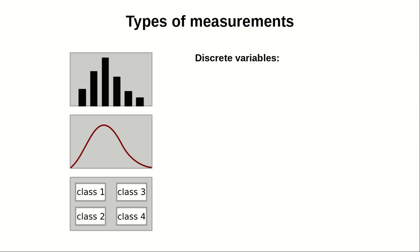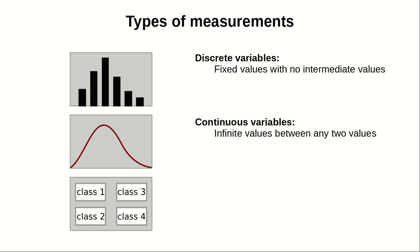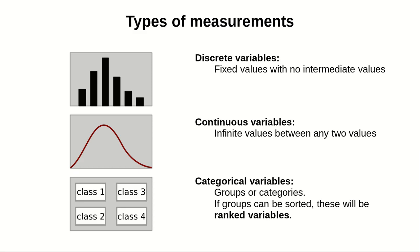We call discrete variables those that have fixed values with no intermediate values. Continuous variables are those that have an infinite number of values between any two values. A categorical variable is a variable that is organized in groups or categories. And if the groups can be sorted, this will be what we call a ranked variable.